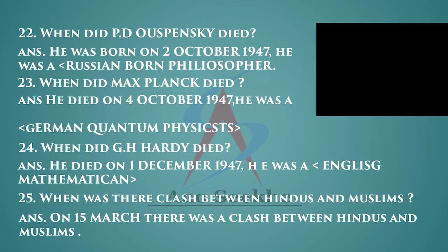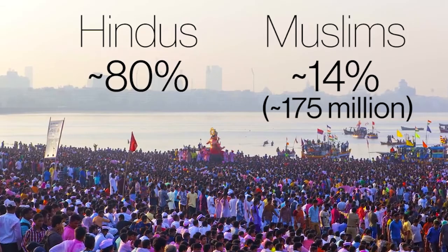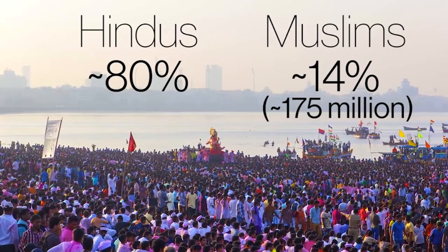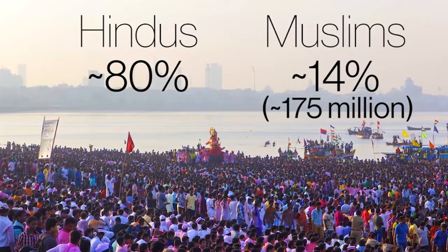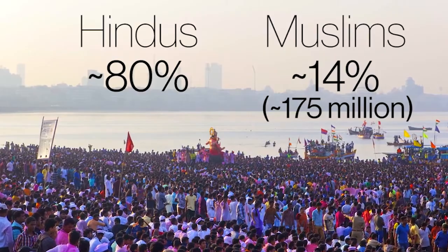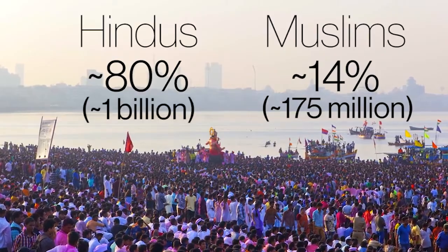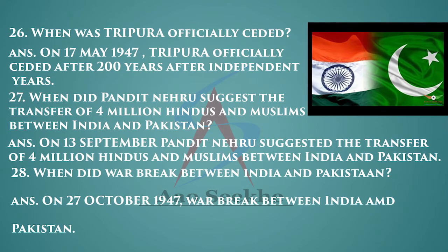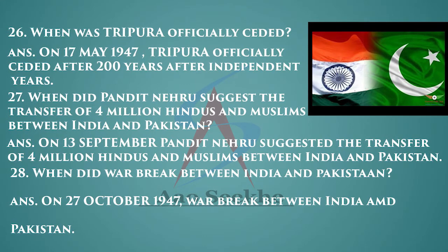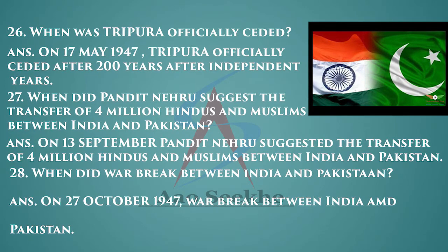When was there a clash between Hindus and Muslims? On 15th March there was a clash between Hindus and Muslims. When was Tripura officially ceded? On 17th May 1947, Tripura officially ceded after two hundred years.